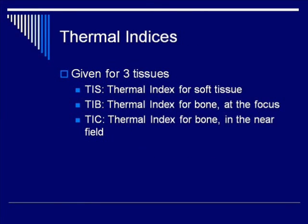So let's return to thermal index. Thermal index is usually given for three different tissues, because the type of tissue plays a very significant role in how much attenuation, and therefore how much heating, you will have. It's usually given for TIS — the thermal index for soft tissue throughout your field, which is the relevant parameter for something like a FAST scan. There's TIB, the thermal index for bone at the surface, which is usually relevant for fetal imaging when calculating age based on femur length, head circumference, or biparietal diameter. Finally, TIC is the thermal index for bone in the very near field, relevant in cranial imaging, which is not really very important in emergency medicine practice.